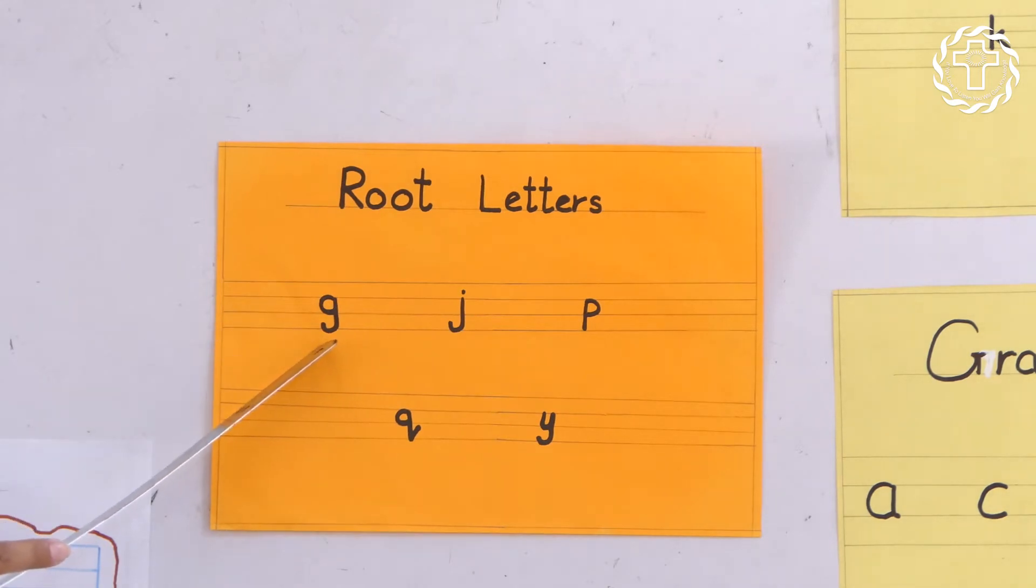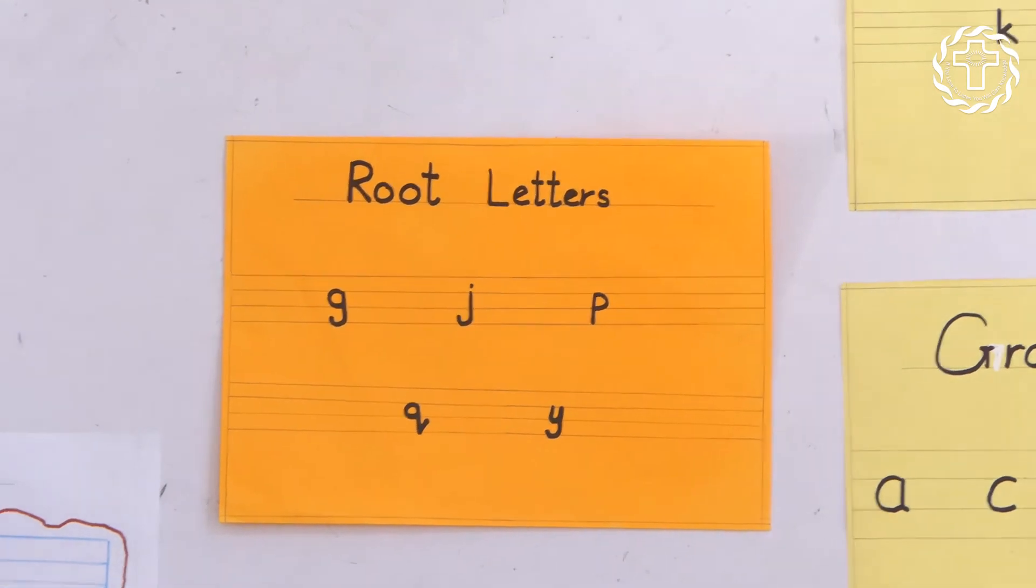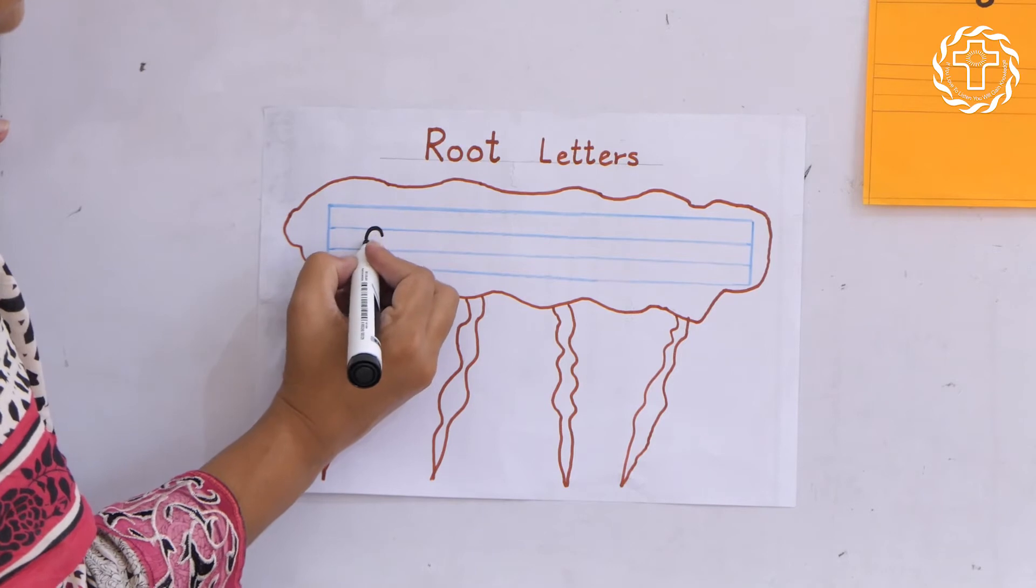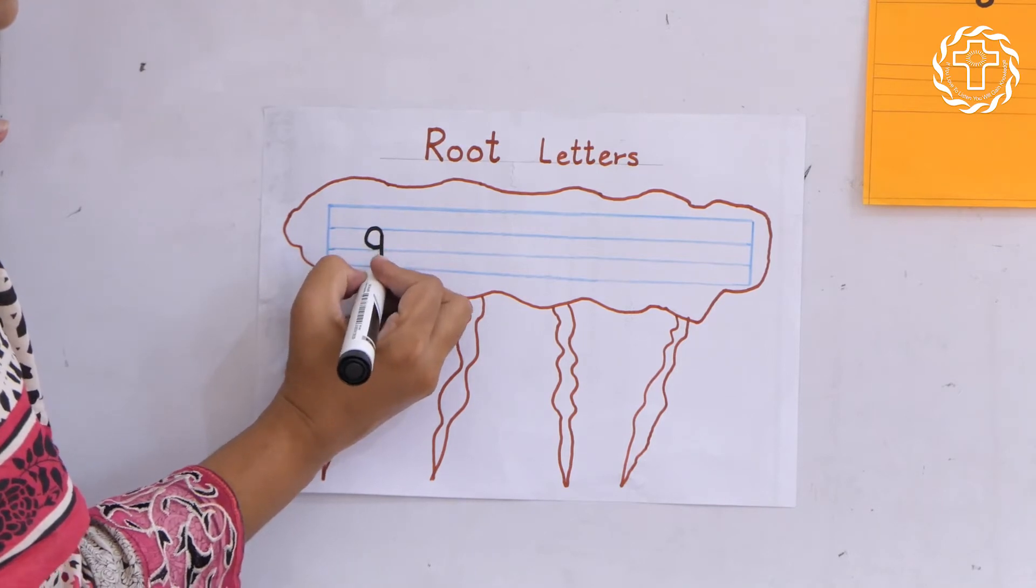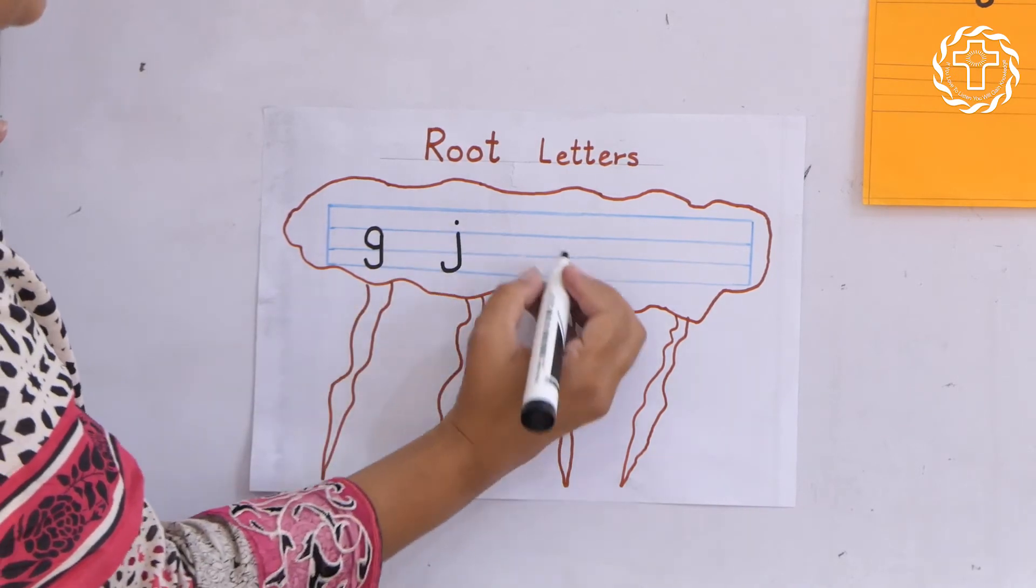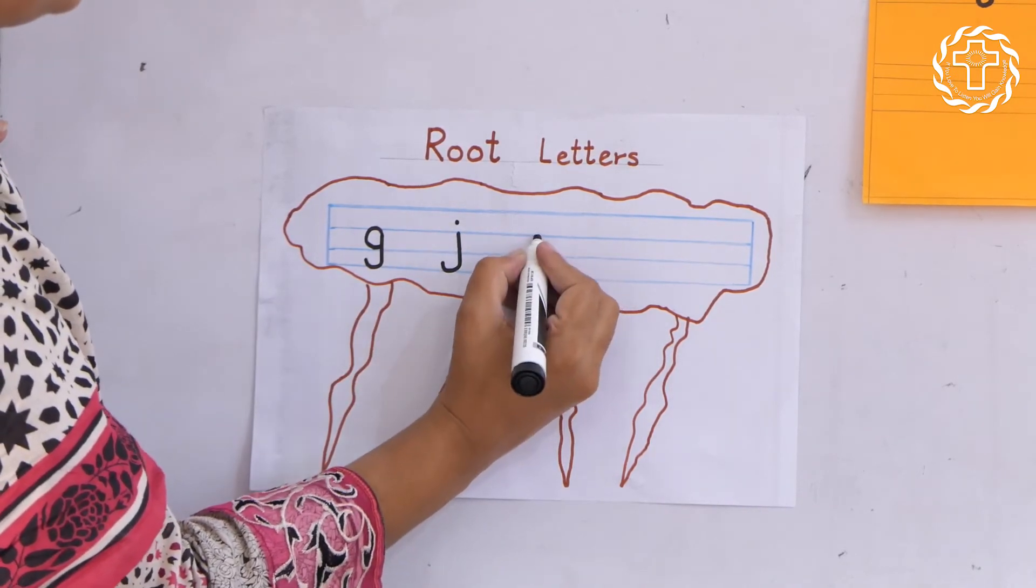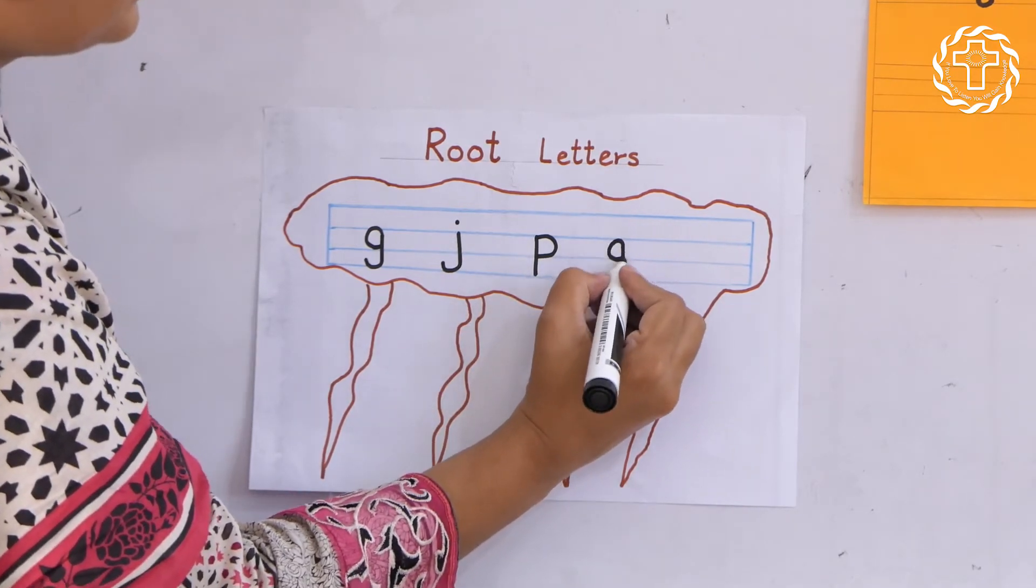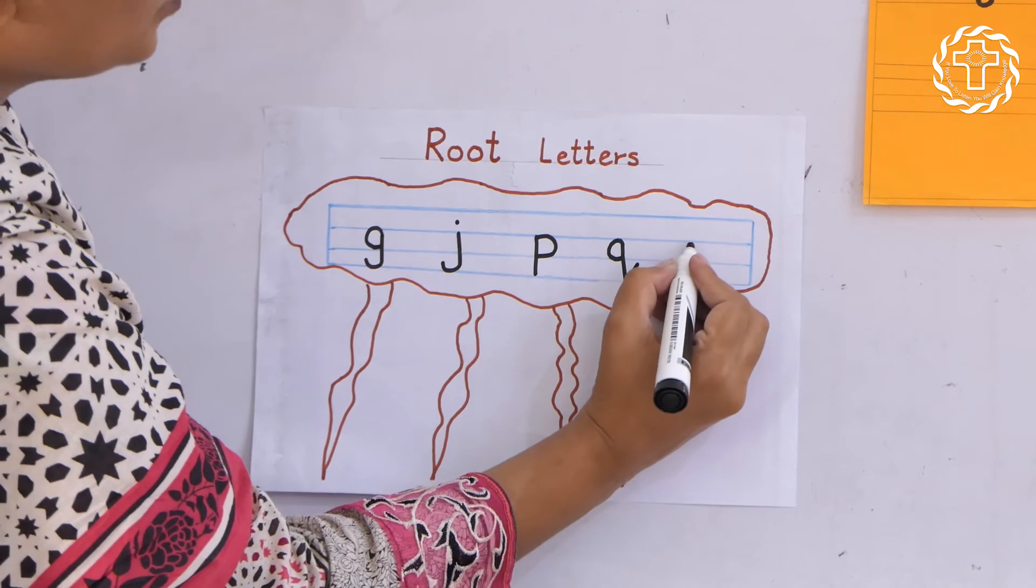Let's count. One, two, three, four, five. Root letters. Let's practice. G, J, P, Q, Y.